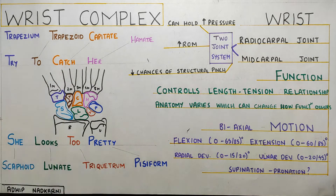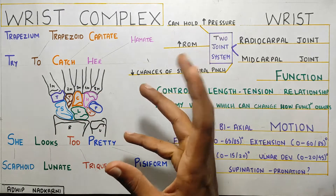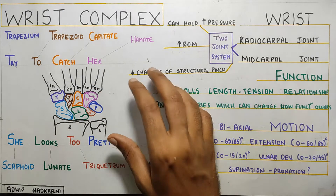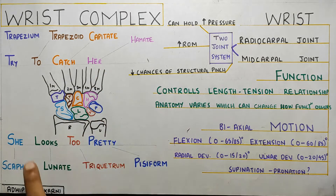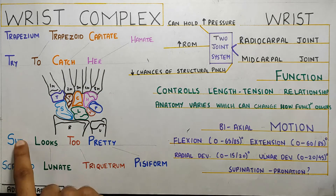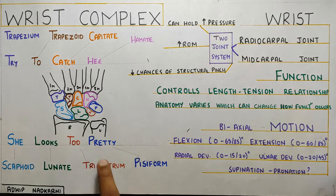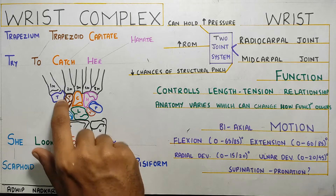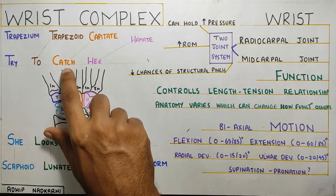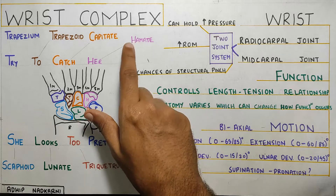First, coming on to the bones — there are eight carpal bones and there is a mnemonic to remember this: 'She looks too pretty, try to catch her.' So S is scaphoid, L is lunate, T is triquetrum, P is pisiform, T is trapezium, T is trapezoid, C catches capitate, and H is hamate.